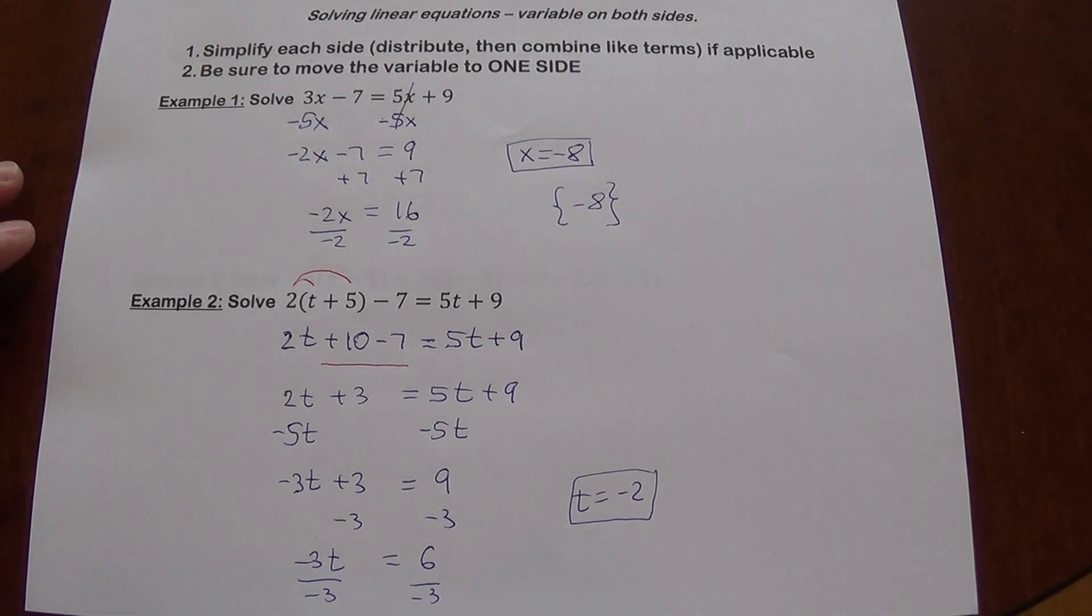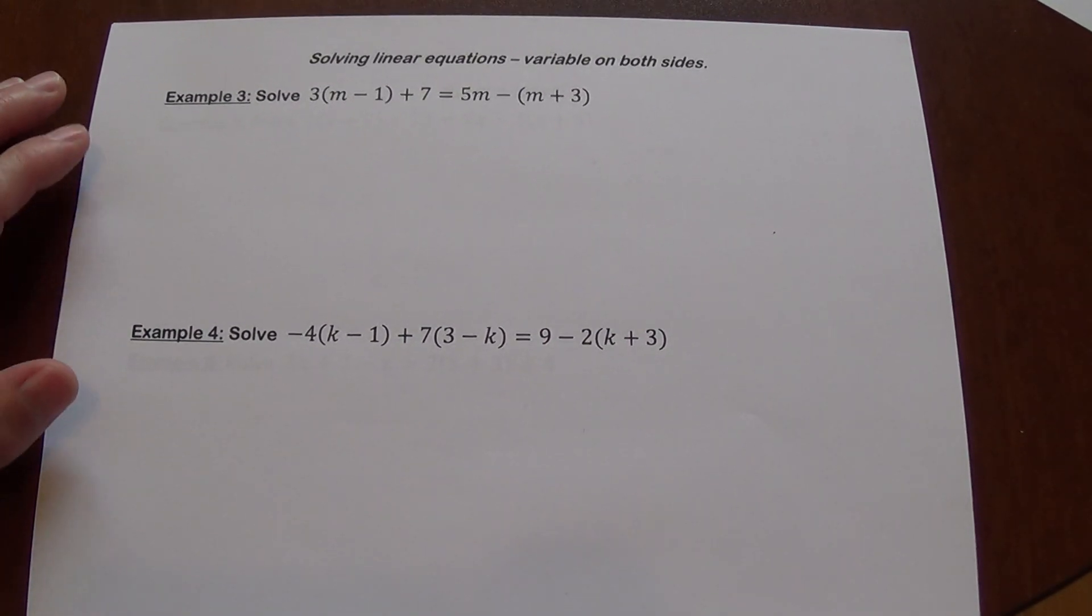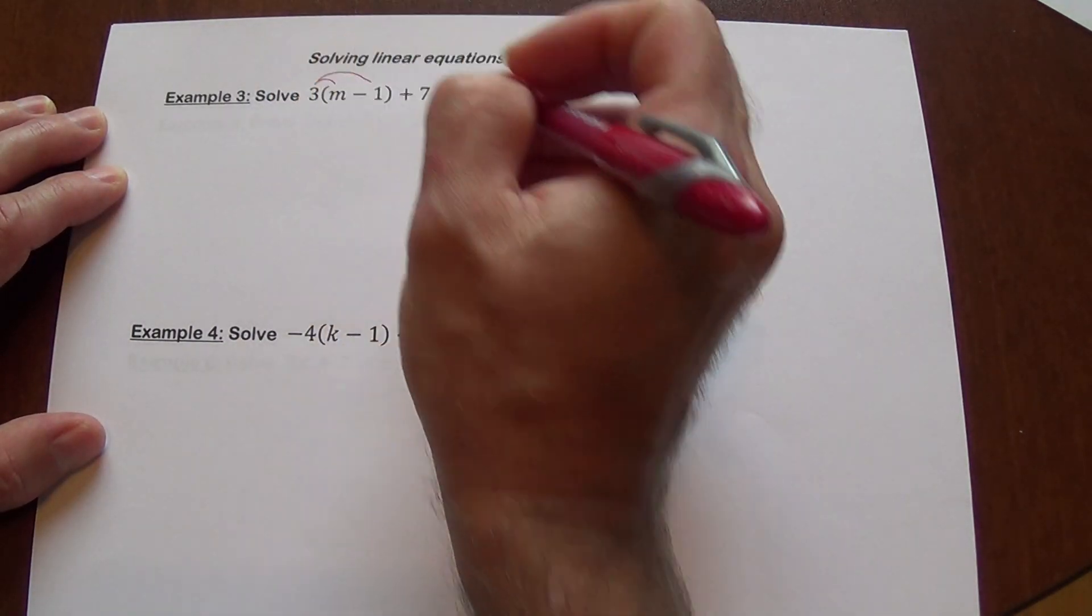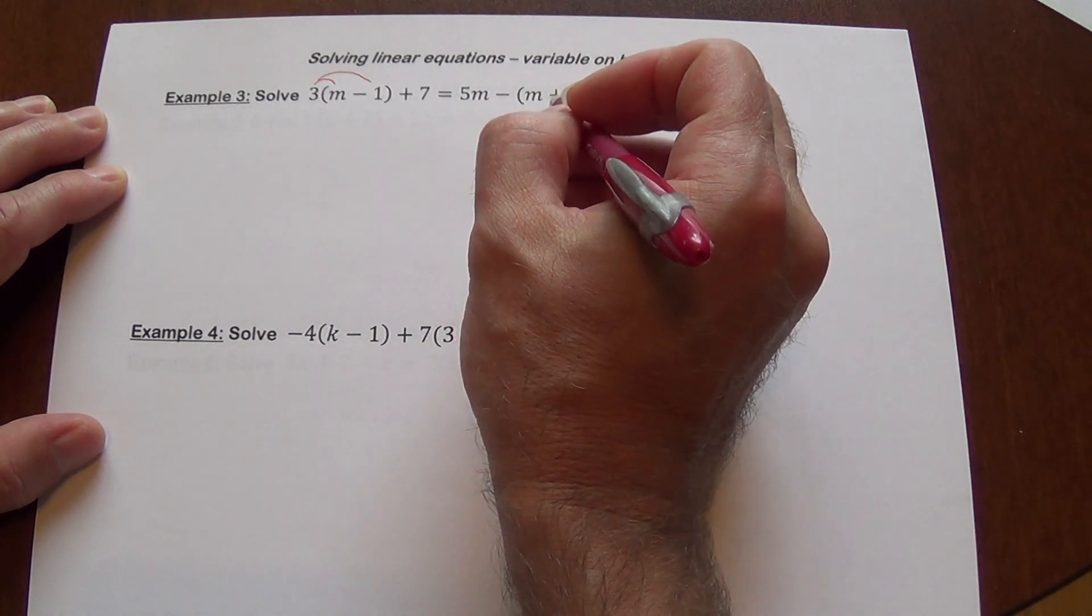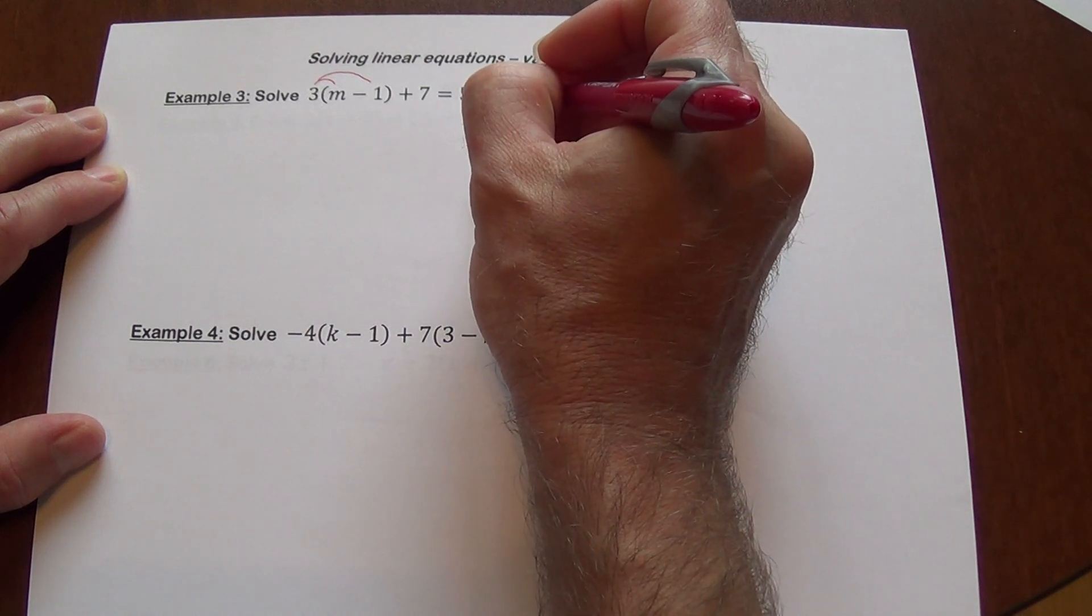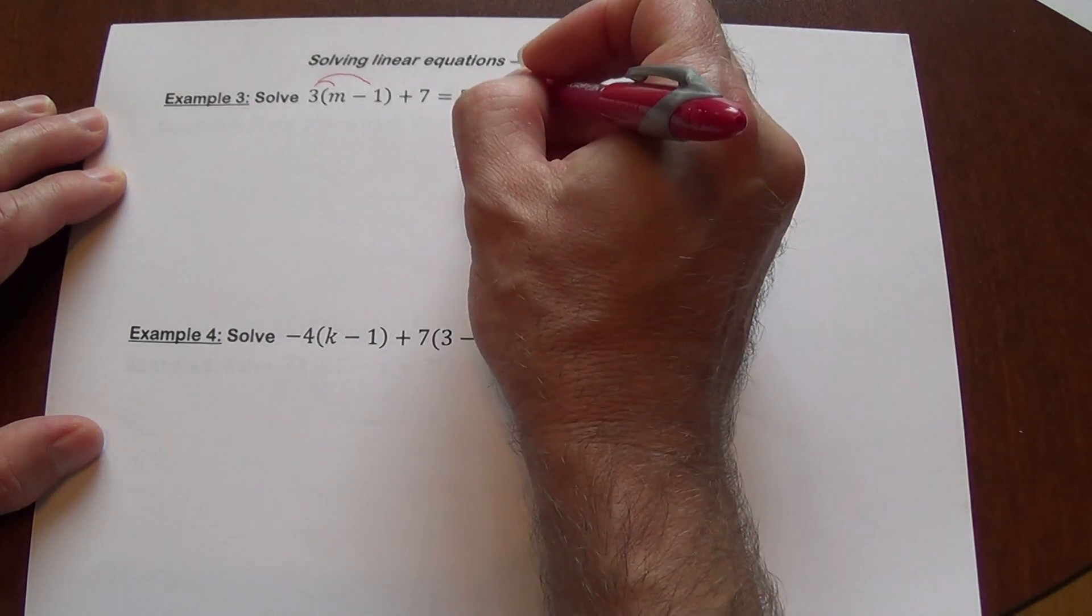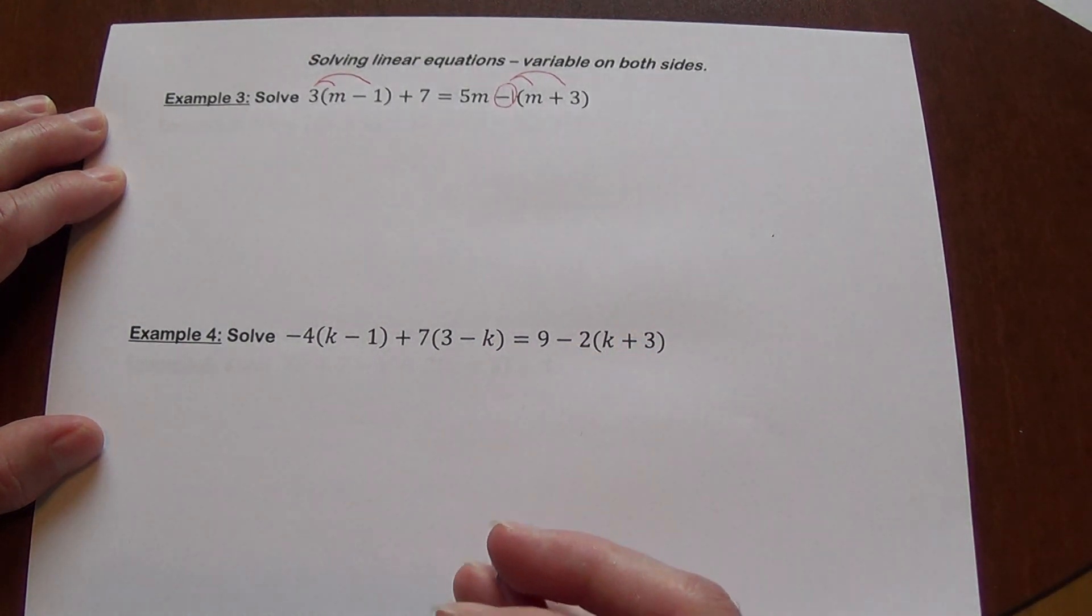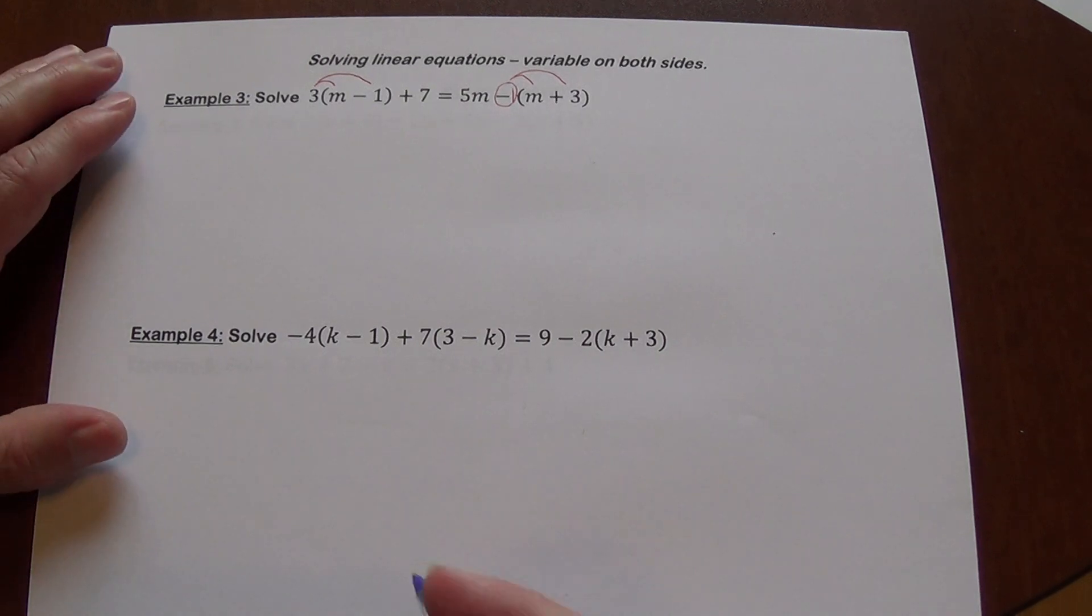Let's take a look at some problems that are a little bit more involved. Take a look at example 3. So there is definitely a lot more here. Let me address a couple of things first. We do have this where we need to distribute the 3. And also right there you have minus and then in parentheses m plus 3. When you see that, the best way to look at that is if you have negative 1 in front of it. And when you are going to distribute that, please remember you have to distribute negative 1. It's a very common mistake when students don't do that.